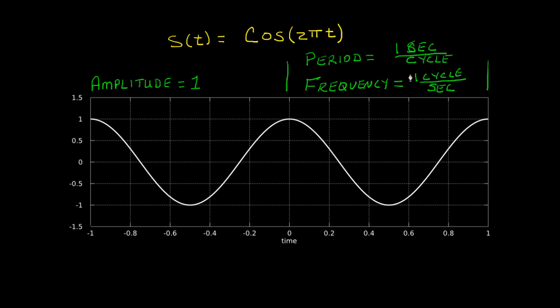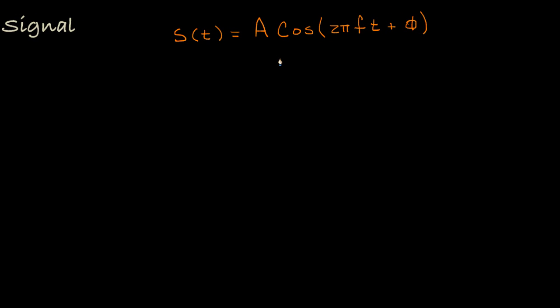It's possible to specify a sinusoid that attains a peak other than 1, and a trough other than negative 1, has a frequency other than 1 cycle per second, and a period other than 1 second per cycle, and attains its first peak at some place other than time equals 0. To do that, we'll need to include three parameters in our definition of the sinusoidal signal. Here's the general form for a sinusoidal signal as a function of time, which is defined by a cosine function with three parameters. The parameter A represents the signal's amplitude. The parameter F represents the signal's frequency. And the parameter φ represents the signal's phase.